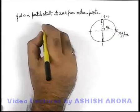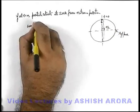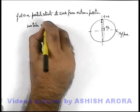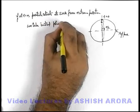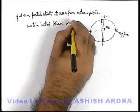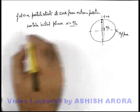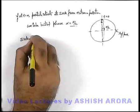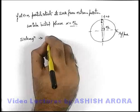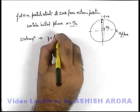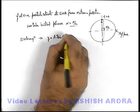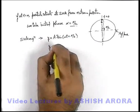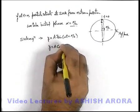So we can state in this situation we take the initial phase of motion to be pi by two. Now if we talk about its SHM equation, we can state the SHM equation will be given by y is equal to A sine of omega t plus pi by two, so that will be y equal to A cosine of omega t.